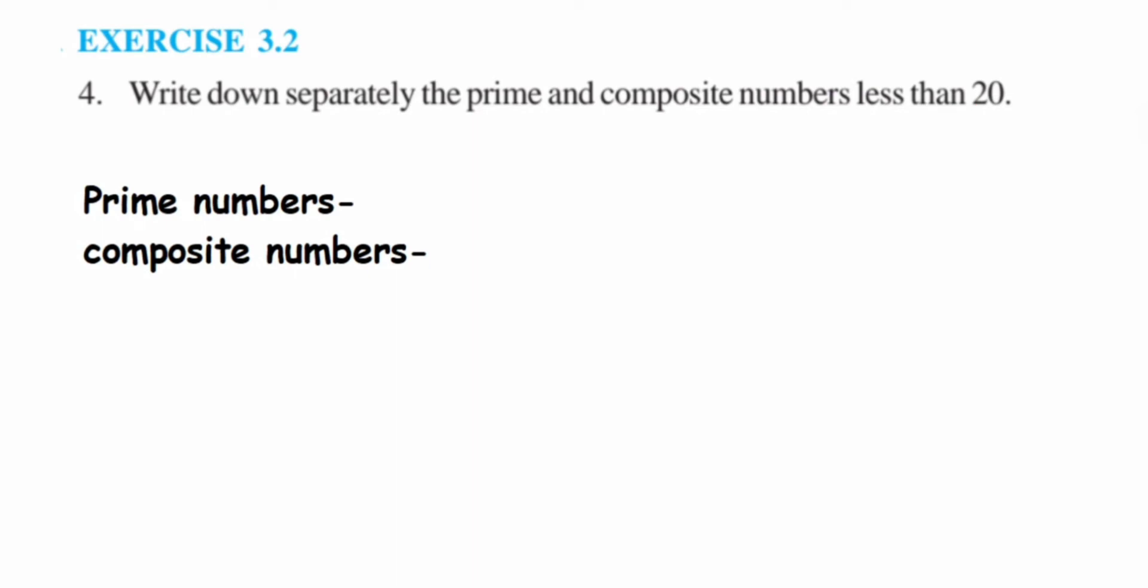Prime numbers are those numbers which have only two factors, exactly two factors: one and the number itself. This means that number will not come in any table except one and the number itself. Composite numbers are those numbers which have more than two factors.